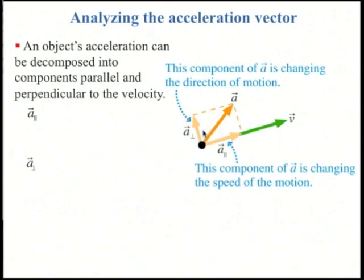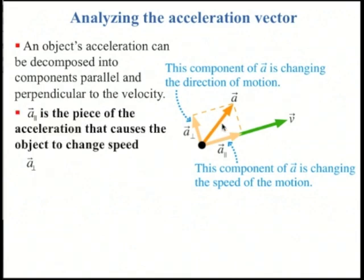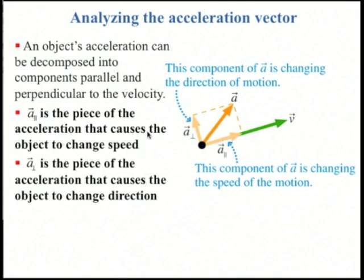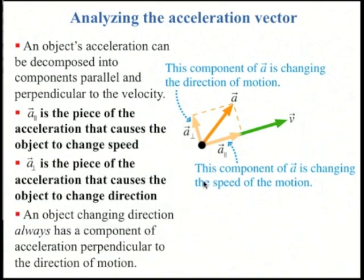So, an object's acceleration can be decomposed into components parallel and perpendicular to the velocity. A sub parallel, these two straight lines, is the acceleration you're probably most familiar with. It's either speeding up or it's slowing down. That changes speed. A sub perpendicular, this little upside down t means perpendicular, is the component of the acceleration which causes a change in direction. And any object that's moving and changing the direction of its velocity always has a component of the acceleration that's perpendicular to the direction of motion.